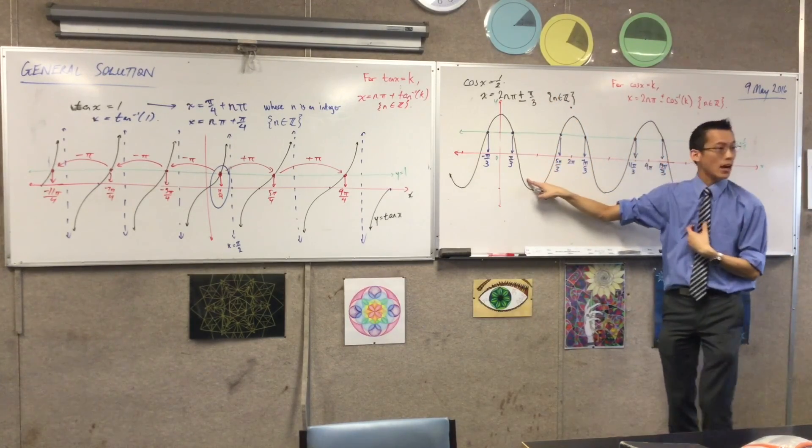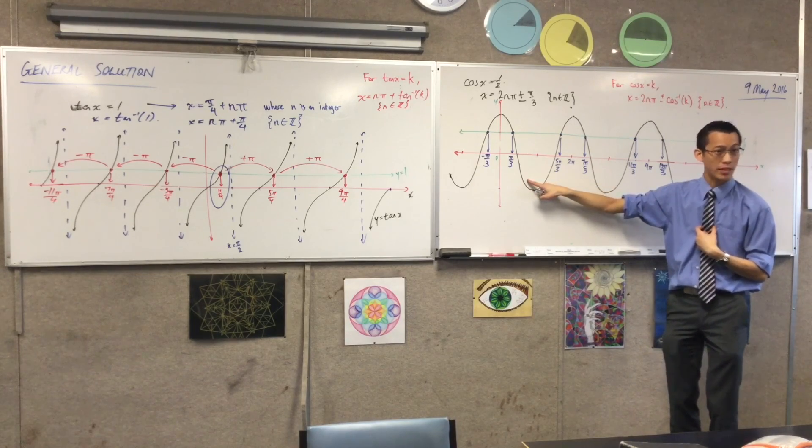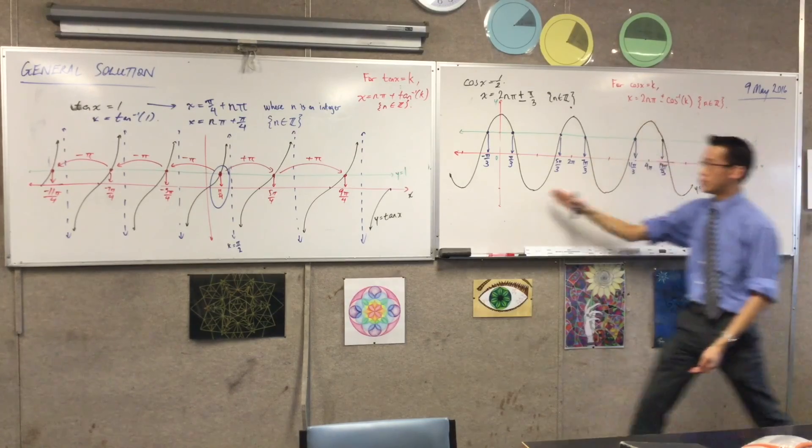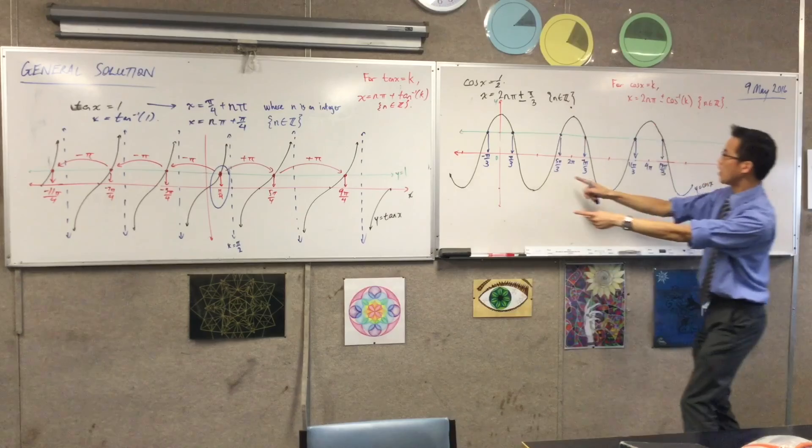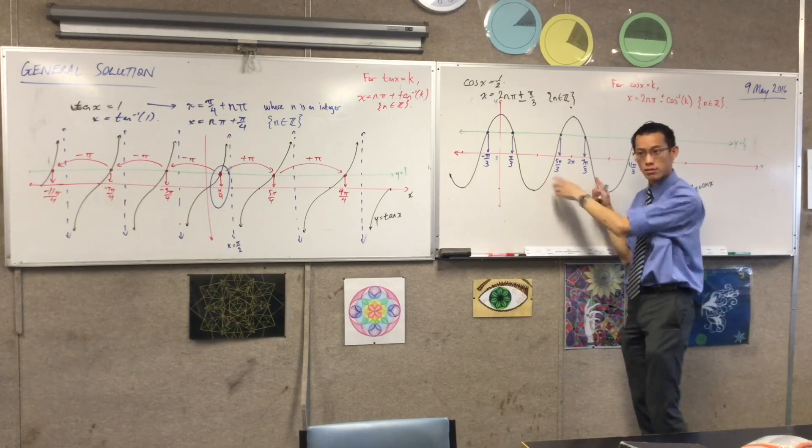So, when you say cos inverse of negative 1/2, it's going to look down here. What is that? That's going to be 2π/3, I believe. So, what you're going to have is 2nπ plus or minus 2π/3. You're going to go this way. You're still going to get a pair of solutions. Here, you're going to go this way, and you're still going to get a pair of solutions. Does that make sense?